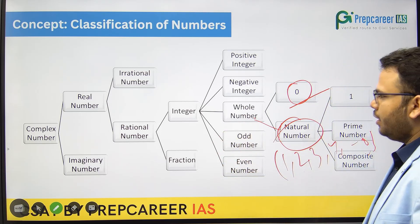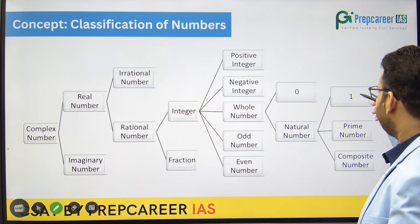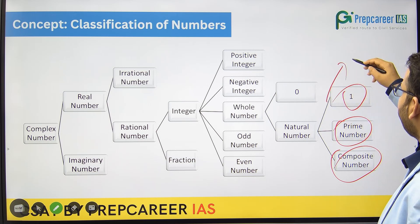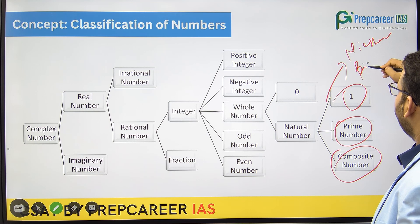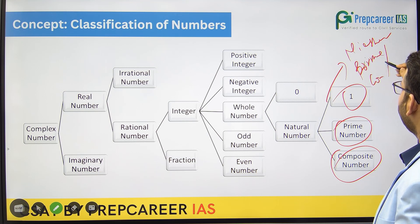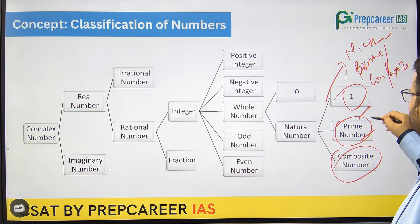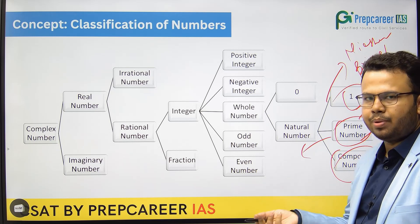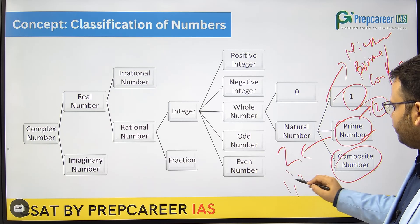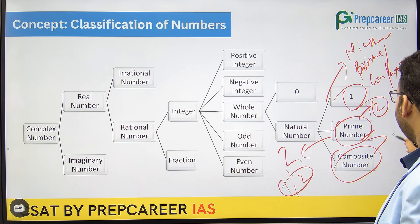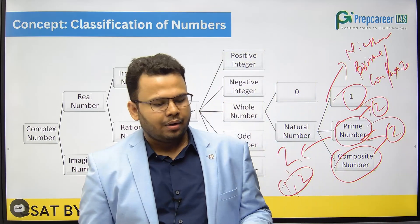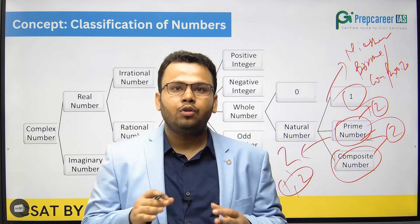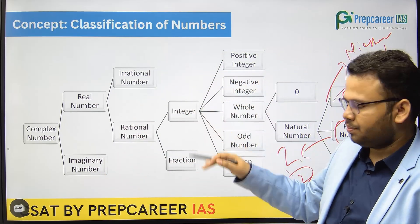Natural numbers can again be subdivided into 3 parts. First is 1 — the number 1 is neither a prime number nor a composite number. The reason is that a prime number needs to have at least 2 factors, and 1 has only 1 factor, which is 1 itself. The smallest prime number and the only even prime number is 2, which has exactly 2 factors: 1 and 2. Composite numbers are those which have more than 2 factors. So the difference between prime and composite: prime numbers have exactly 2 factors, while composite numbers have more than 2 factors.